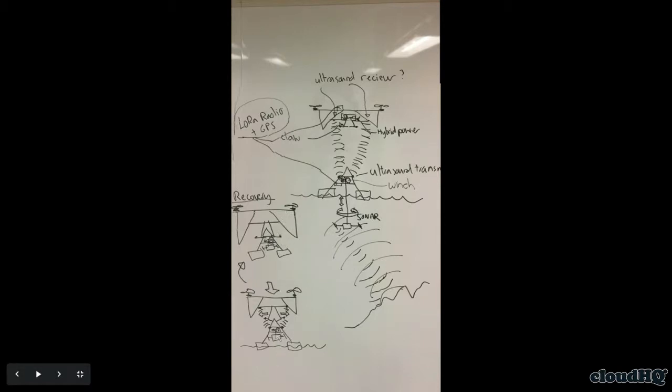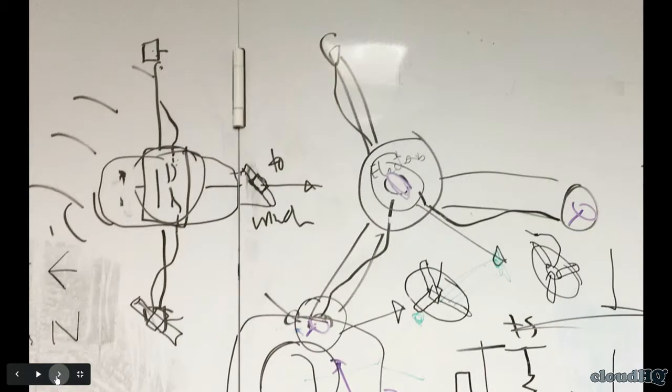This is what our sonar pod is supposed to look like. It's a side view. It's got three receivers and a central transmitter and the central epoxied electronics module.